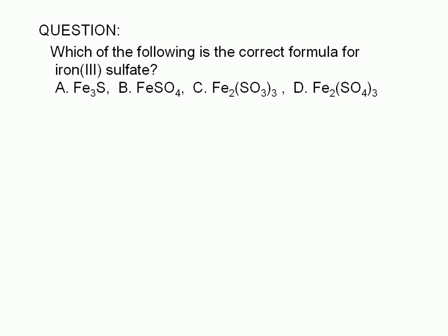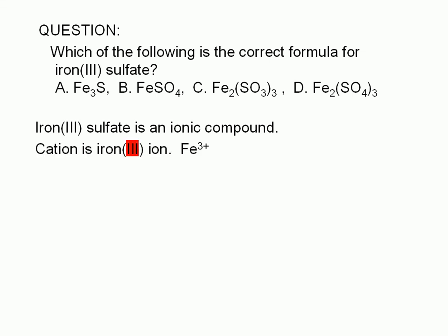To determine the formula of a compound given its name, we need to first classify the compound and then apply the rules that apply to that kind of compound. Iron 3 sulfate is an ionic compound. If the name of a compound starts with the name of a metallic element, it's ionic. Cations are generally derived from atoms of metallic elements, such as iron. A Roman numeral III written next to the name of a transition or post-transition metal tells us the charge of the cation. So in this case, we know that the cation is iron with a plus 3 charge.